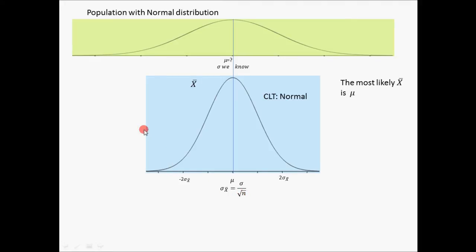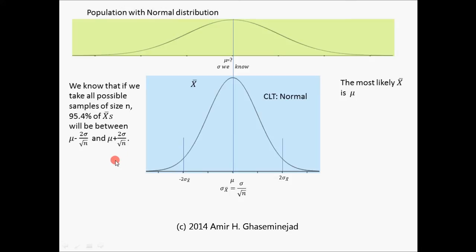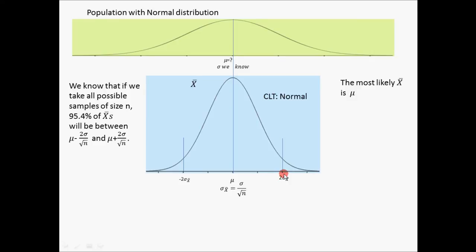Since we know a lot about the normal distribution, we can make a lot of predictions about the behavior of X-bars. For example, we know that if we take all possible samples of size n, 95.4 percent of sample means will be between mu minus 2-sigma divided by square root of n, and mu plus 2-sigma divided by square root of n. That is basically using our understanding of the normal distribution and applying it to the distribution of sample means, which we know has a normal distribution.